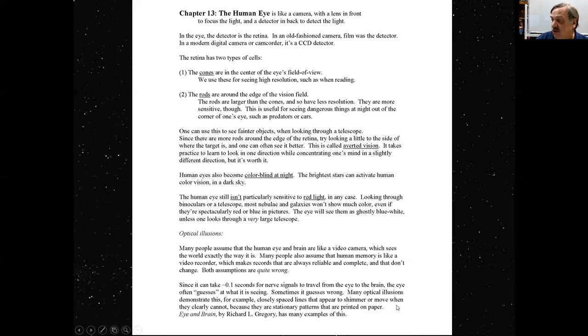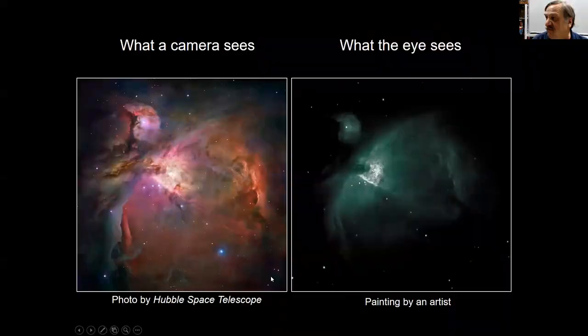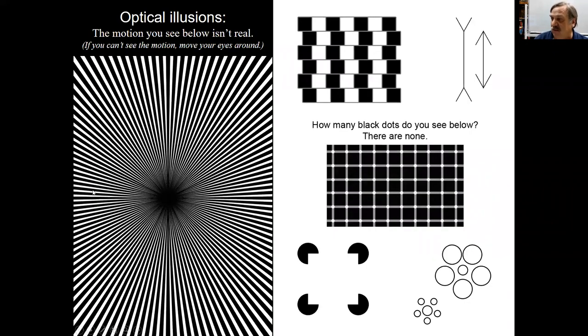Many optical illusions demonstrate this. For example, closely spaced lines that appear to shimmer or move when the eye clearly cannot because they're stationary patterns that are printed on paper. The book Eye and Brain by Richard Gregory has many examples of this. And I have a few here. For example, this shimmering, the shimmering motion that you see when you look at this. And if you don't see the shimmering motion, move your eyes around. That shimmering motion is not real. If you can't see the motion, move your eyes around. The point is, it's your eyes and your brain trying to make sense of this. And they're not really doing that great of a job of it. And many other optical illusions are basically the eye and the brain guessing at recognizing patterns and getting it wrong.